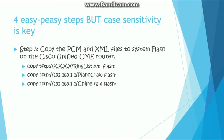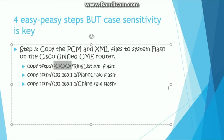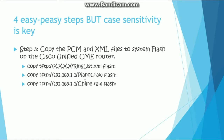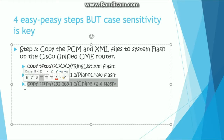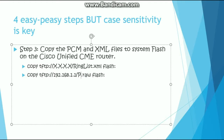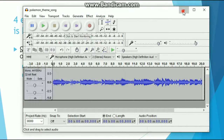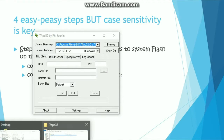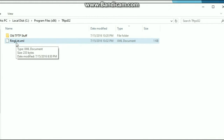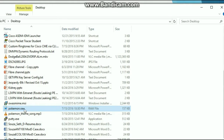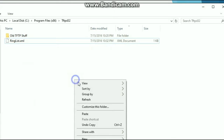Moving on to step three: copy the PCM — which is actually the raw file — and XML files to the system flash on the CME router, which is also the TFTP server. We are going to push the ringlist.xml and the Pokemon.raw file to flash via TFTP. I have TFTP running here, so I need those files to be in the TFTP directory. I have the ringlist.xml — now I need the Pokemon.raw file. Go ahead and cut and paste that into the TFTP directory.